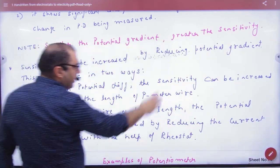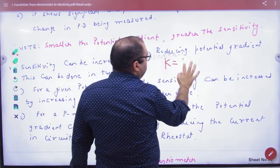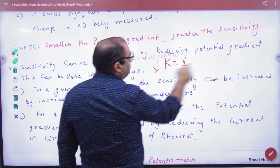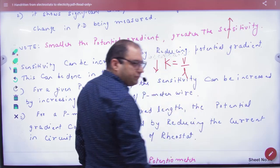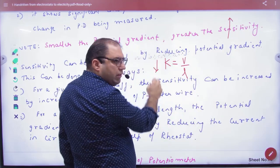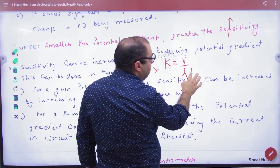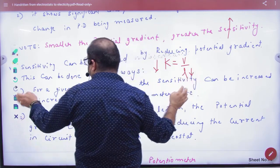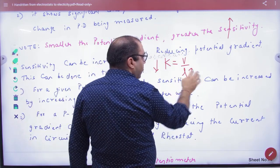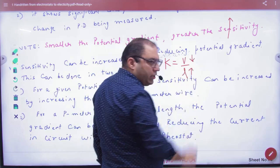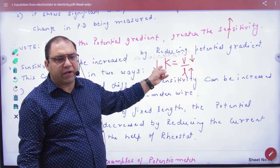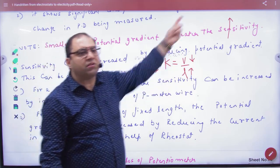Now the potential gradient will be small. This will be written in two lines. Potential gradient will be small if this is small, then the sensitivity will be bigger. And when will it be small? When the potentiometer wire balancing length will be bigger, when the length value will be bigger and the value of V will be small. The numerator will be small, the denominator will be bigger. The potential gradient will be small, and if it will be small, the sensitivity will be bigger.